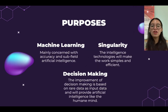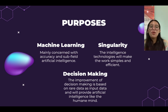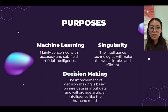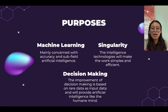The purpose of artificial intelligence. The first one is machine learning, mainly concerned with accuracy and sub-fields of artificial intelligence. The second one is simplicity — intelligence technologies will make the world simpler and more efficient. The last one is decision making, where improvement of decision making is based on data as input and will provide artificial intelligence similar to the human mind.